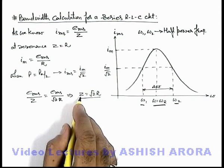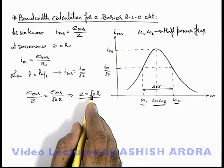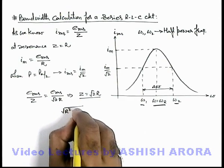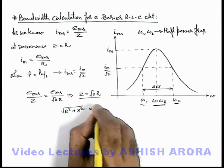So when Z is equal to root 2 R, the power in the circuit will be half of the maximum. And we know the value of Z we write as root of R square plus X square, which is equal to root 2 R.